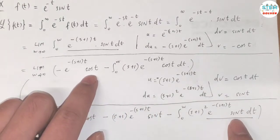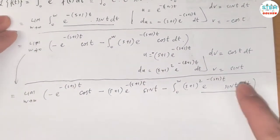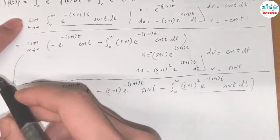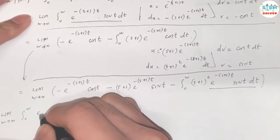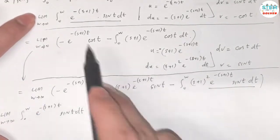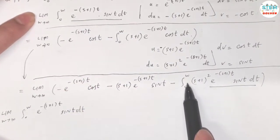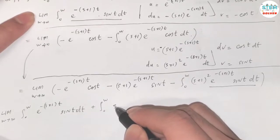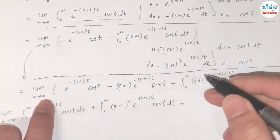Since the integral cycles back to itself after two rounds of integration by parts, we move it to the other side. This gives: the limit as w goes to infinity of [1 + (s+1)²] times the integral from 0 to w of e^(-(s+1)t)·sin(t) dt, equals the limit of the boundary terms.